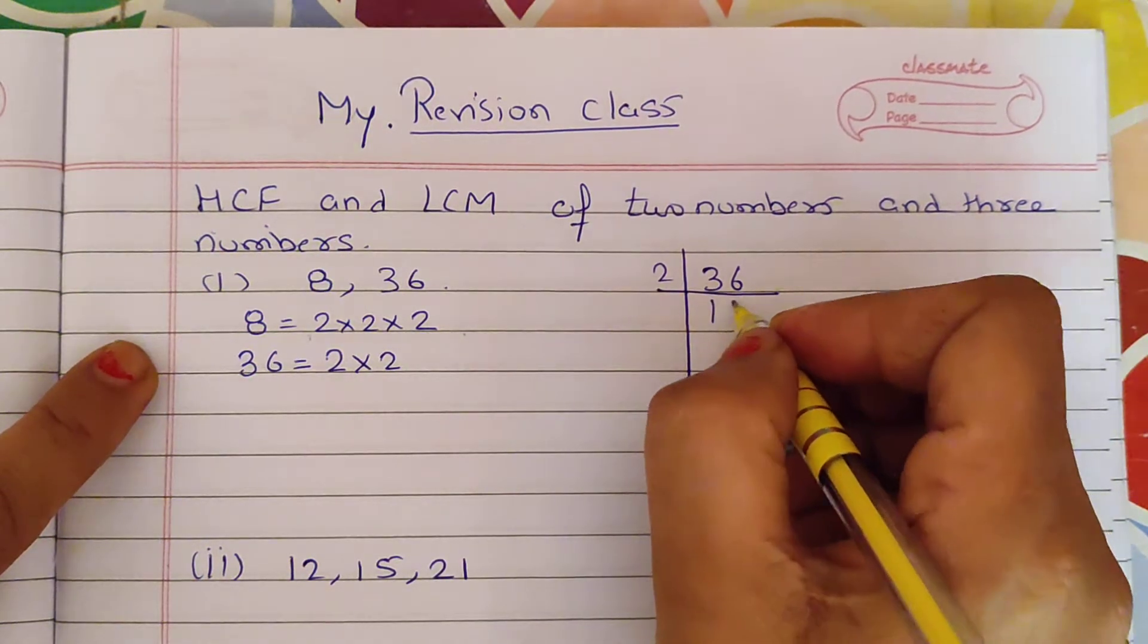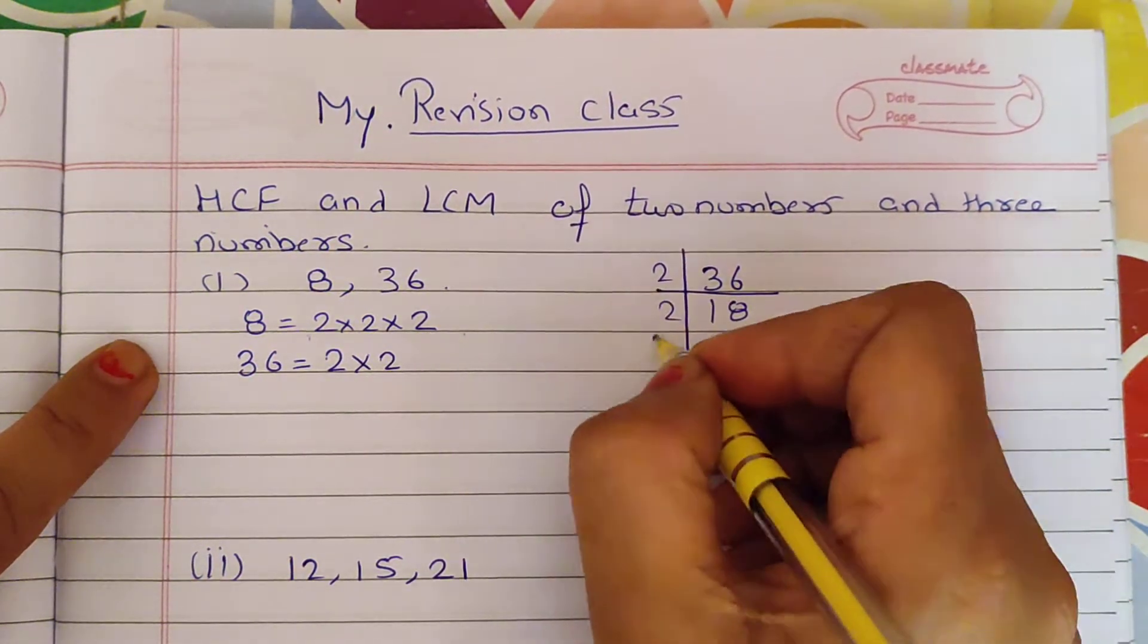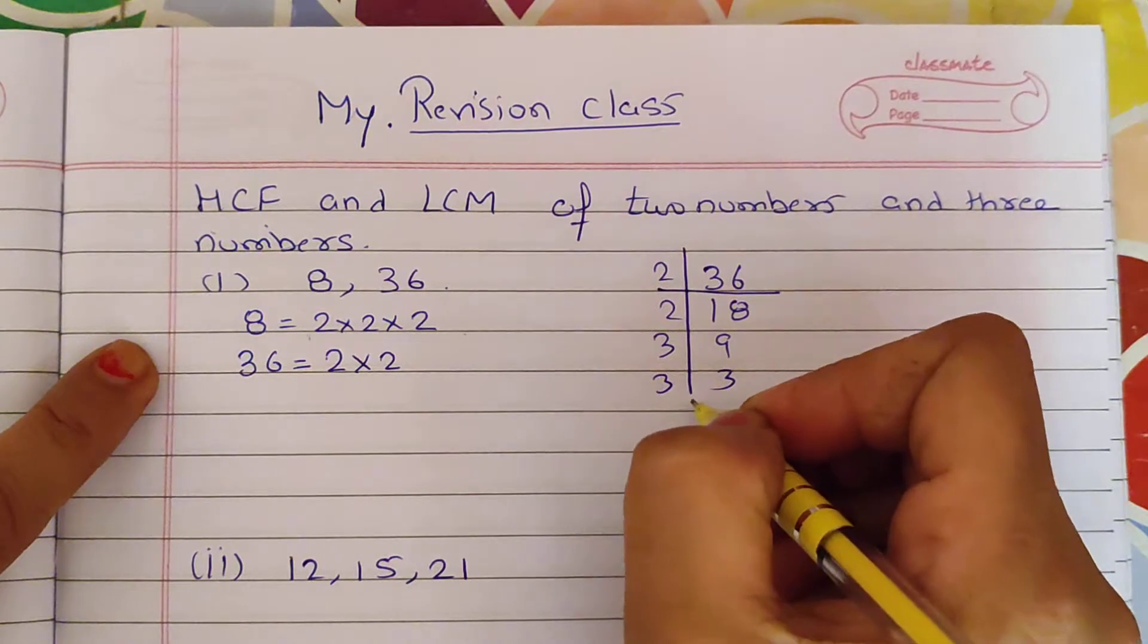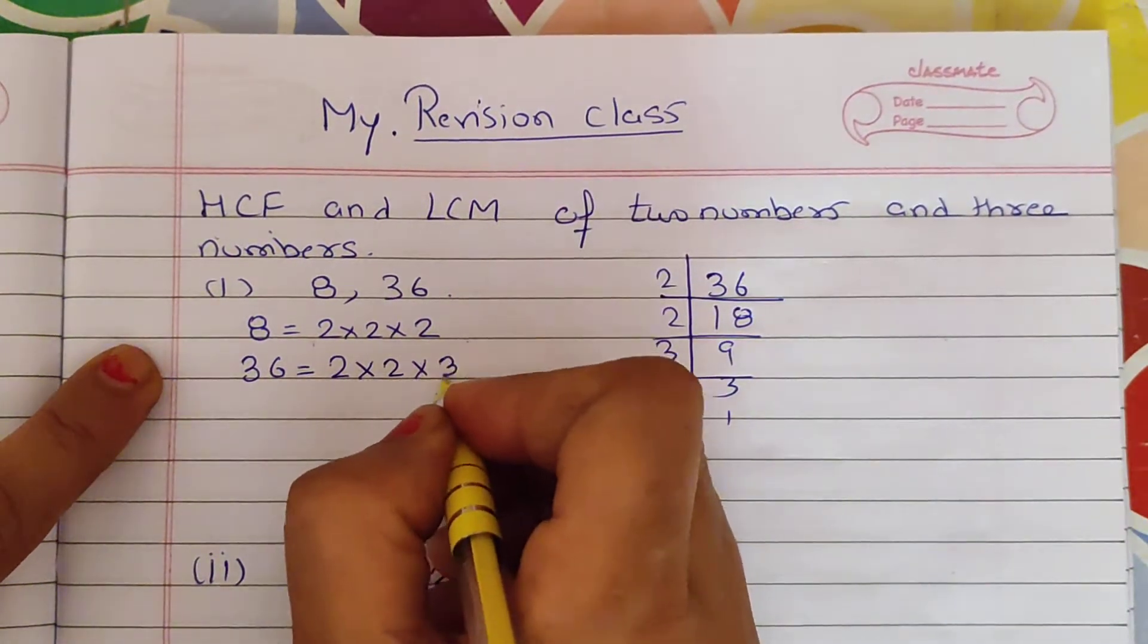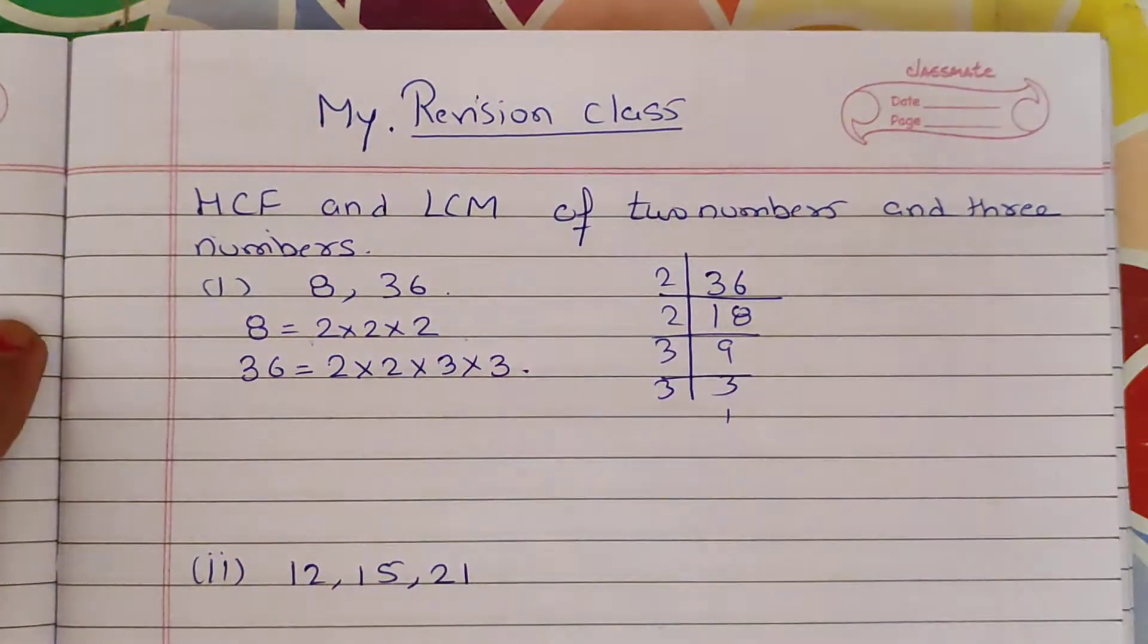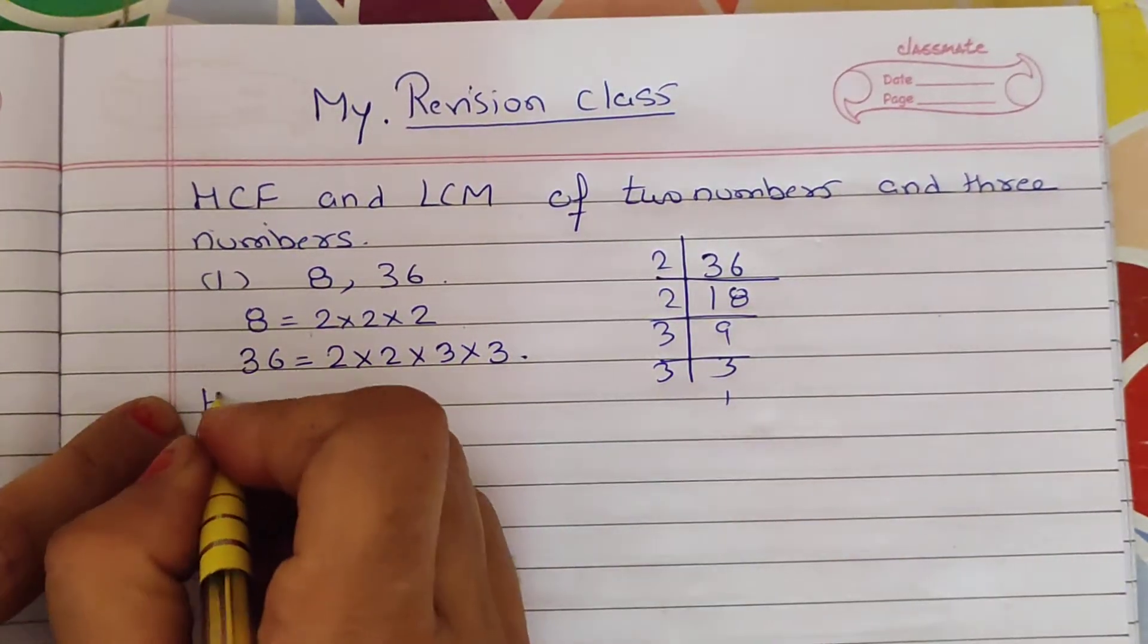No, we don't do it. The sum is wrong. 18, then 2, then 9, then 3, then 3, then 1. We make factors: 2 into 2 into 3 into 3.